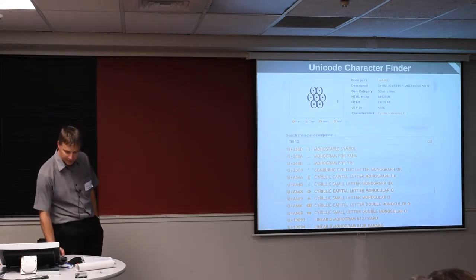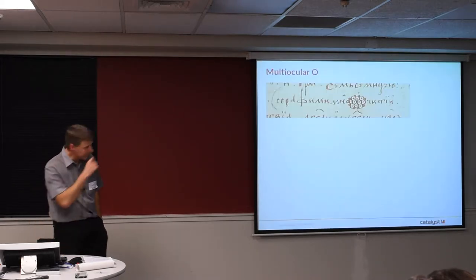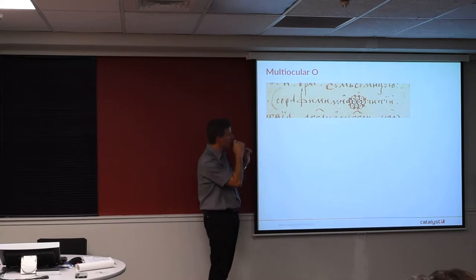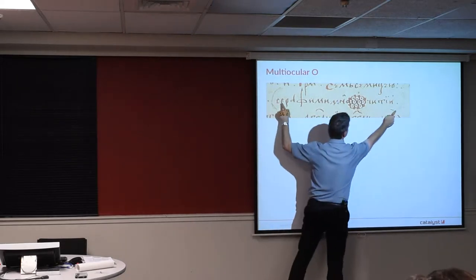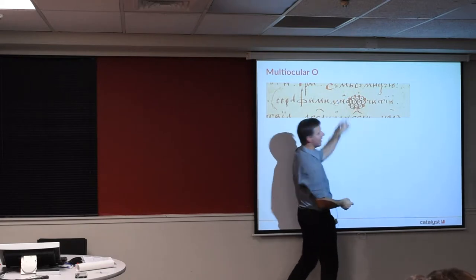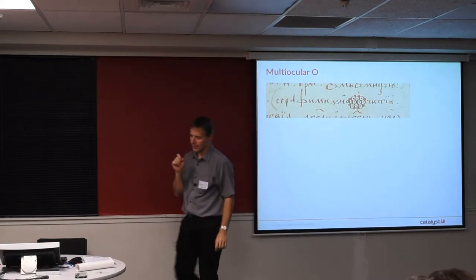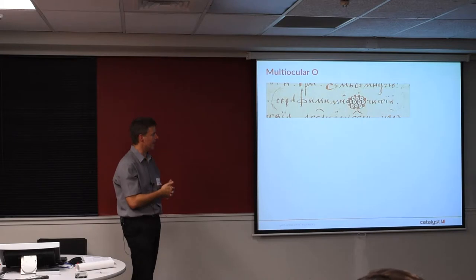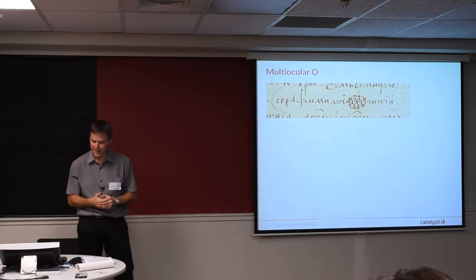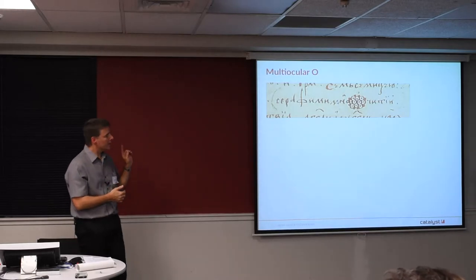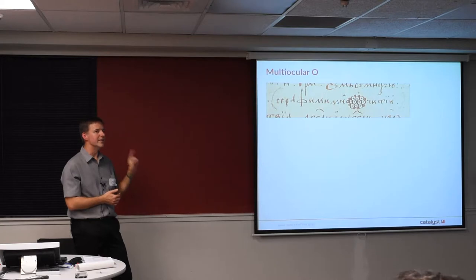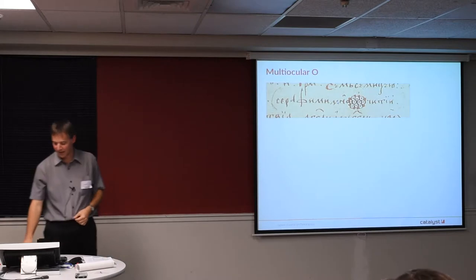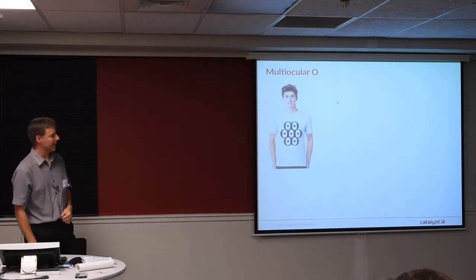This one is a bit of a celebrity. Here's a word in Cyrillic — so an Eastern European language. This is a two-word phrase, and that two-word phrase means "many-eyed seraphim" — so kind of like an angel, some sort of celestial being with many eyes. That one word in one manuscript is the only known occurrence of the use of this character. But it's in Unicode.